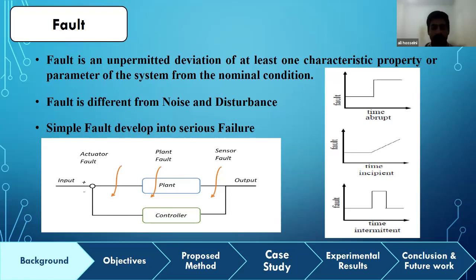To avoid production deterioration and enhance system reliability, measures must be taken to stop the propagation of faults and restore the system as much as possible to satisfy performance when fault occurs. Faults are completely different from noise and disturbance because faults usually have inner sources. As you can see in the figure at the bottom of the slide, fault can affect actuator, plant, and sensor in our closed-loop. Also, we have three kinds of faults: time abrupt, time incipient, and time intermittent.